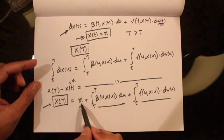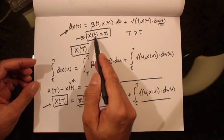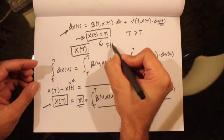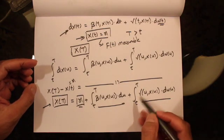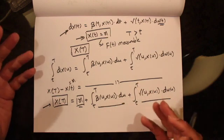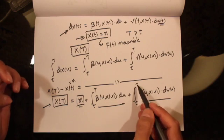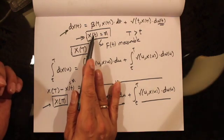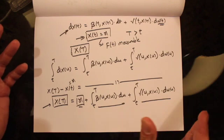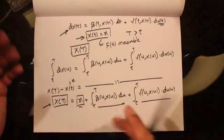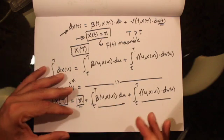One important thing to remember is that x, the initial condition at time t, is F_t measurable. The integral depends on the paths of the Brownian motion between small t and capital T, and does not depend on paths before time t because we are given the initial condition. Parts of the Brownian motion between t and T are independent of the information available at time t — the increment is independent of F_t. This is a feature of Brownian motion and is relevant to the Markov property of x(t).